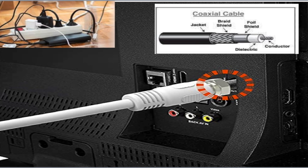Now let's assume that this power bar here is within close proximity of this coaxial cable connected to this television. Let's assume at the moment that this power bar is in the off position. I'm going to explain to you what will happen when it's turned on.